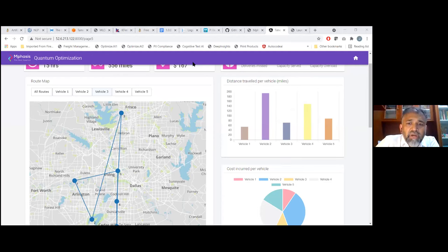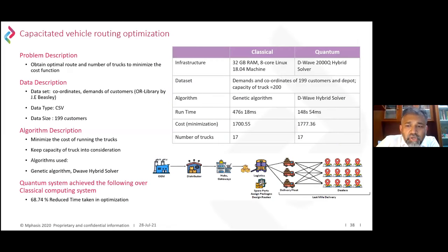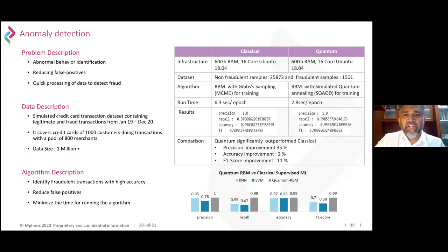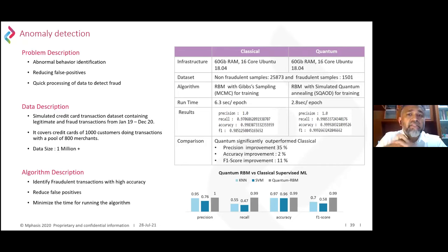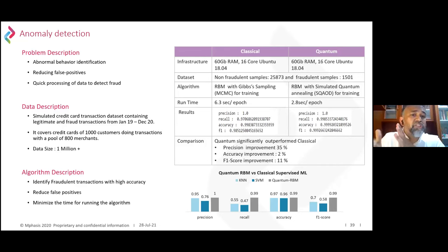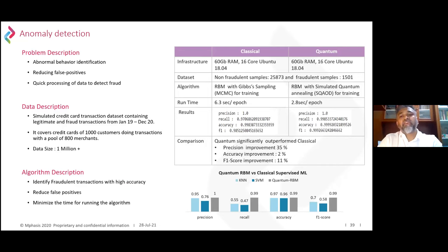In the interest of time, I won't show the third demo live, but this is the anomaly detection scenario — identifying anomalies in credit card data representing fraudulent transactions. We ran the same machine learning experiment on classical versus quantum systems using a dataset of over one million records. You can see the improvement in precision, accuracy, and F1 score across the board when comparing classical versus quantum systems.